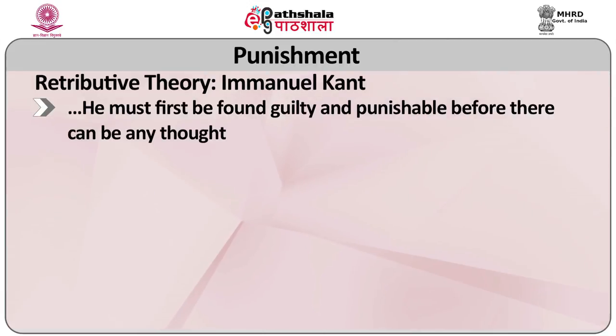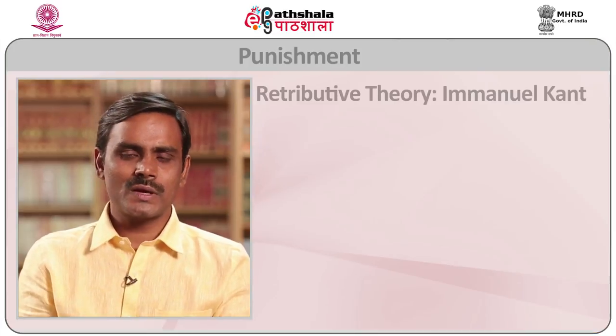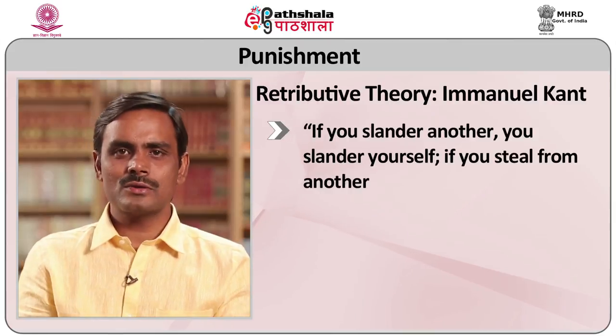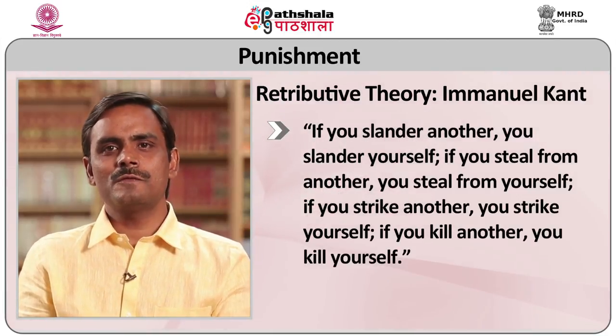He must first be found guilty and punishable before there can be any thought of drawing from his punishment any benefit for himself or for fellow citizens. In another observation Kant asserts: what is the mode and measure of punishment which public justice takes as its principle and standard? It is just the principle of equality, by which the pointer of the scale of justice is made to incline no more to one side than the other. The undeserved evil which anyone commits on another is to be regarded as perpetrated on himself. Hence it may be said: if you slander another, you slander yourself; if you steal from another, you steal from yourself; if you strike another, you strike yourself; if you kill another, you kill yourself.